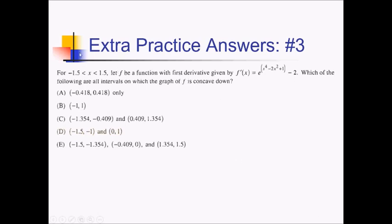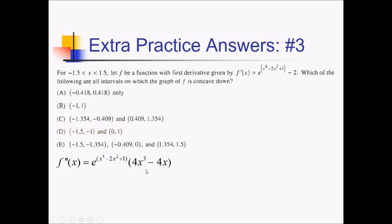For this problem, on the interval from negative 1.5 to positive 1.5, we have some f function whose first derivative is given right here. We want to know which of these intervals has a graph that is concave down — so we're basically asking where is f double prime negative. Before we can answer that, we need to figure out what f double prime looks like. So let's take the derivative of f prime. That's going to be e to the something times the derivative of the something, which is 4x cubed minus 4x. The derivative of minus 2 is just 0. So on our calculator, we're going to figure out where this equals 0.